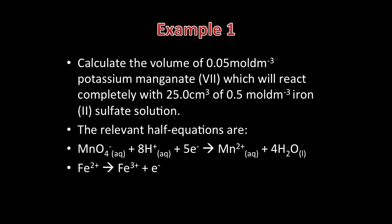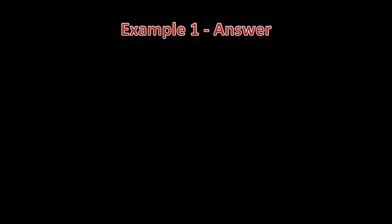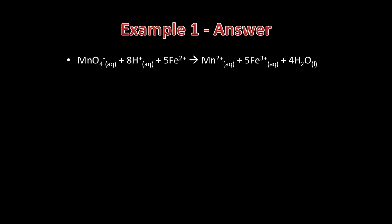The first thing you need to do is write a balanced overall equation. This is a very common reaction in redox titrations. The overall equation is MnO4- + 8H+ + 5Fe2+ → Mn2+ + 5Fe3+ + 4H2O. The Fe2+ equation needed to be multiplied by 5 so the electrons cancelled out.